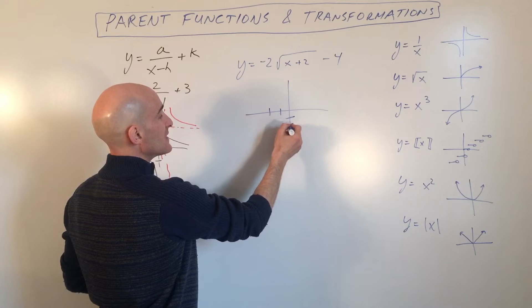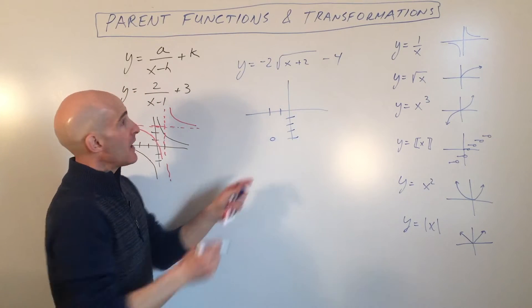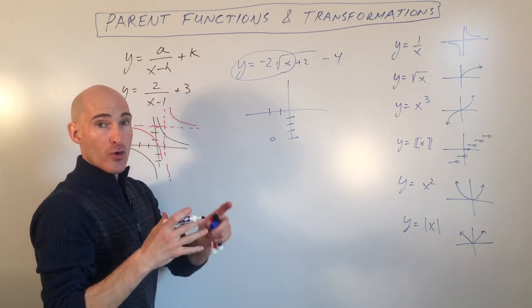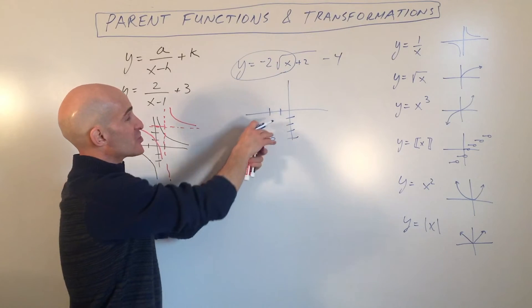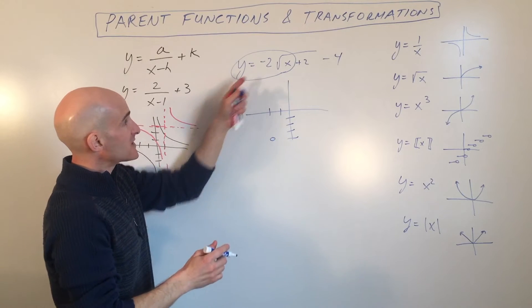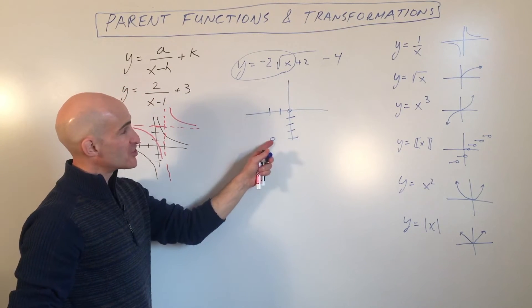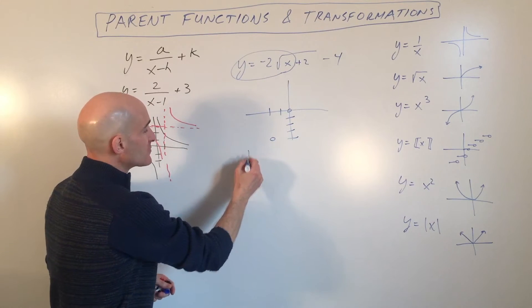So left 2, down 4. So we can think of that as our starting point. And if we look at what's left, this is going to be like our core function, our parent function. The 2 is going to stretch the graph. The negative is going to reflect the graph. So what we can do is we can make a table. Instead of graphing from the origin like we normally do, we're going to graph from the shifted point since everything is going to be shifted left 2 and down 4. So let's just make a table.